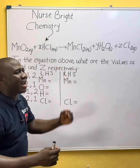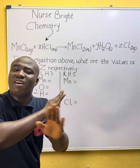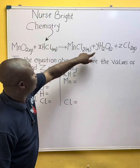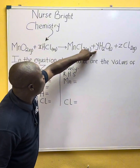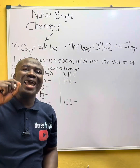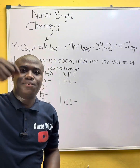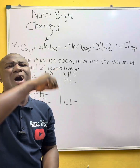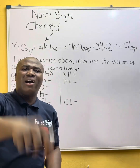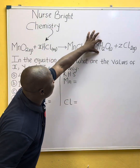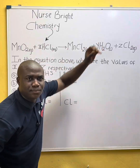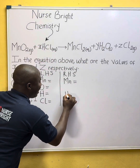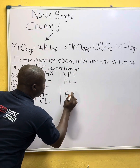Just write out the elements — don't worry about the numbers attached for now. You can see why: X, Y, and Z are not elements; they are what the question wants us to determine. The next element on the right-hand side is H, which is hydrogen. So I'll write H equal to.